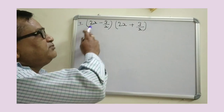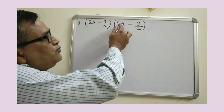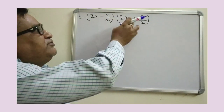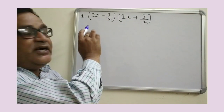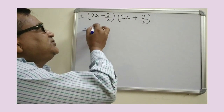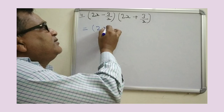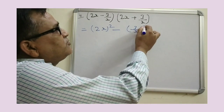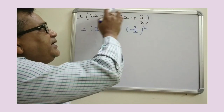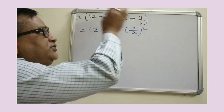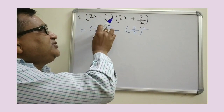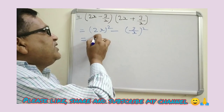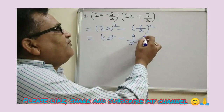The next question is: 2x minus 3 upon x into 2x plus 3 upon x. This is based on the identity x plus a into x minus a. The brackets are the same but the signs are opposite, so we solve this as first number squared minus second number squared: 2x squared minus 3 upon x whole squared. After solving, 4x squared minus 9 upon x squared is the final answer.